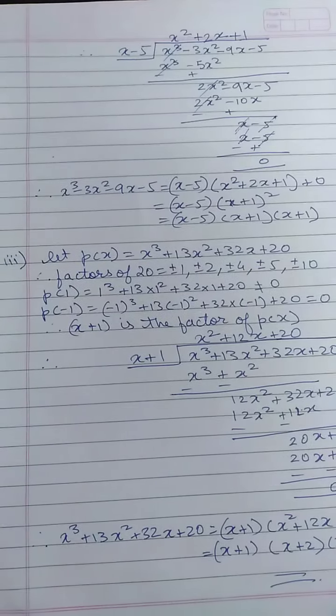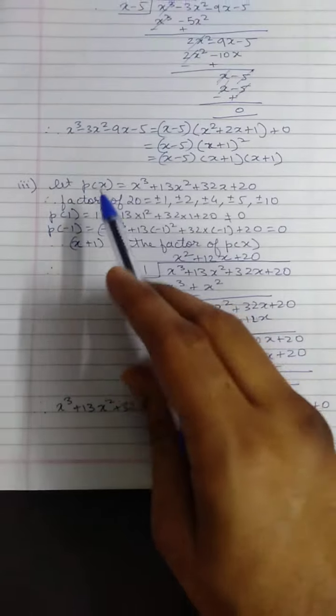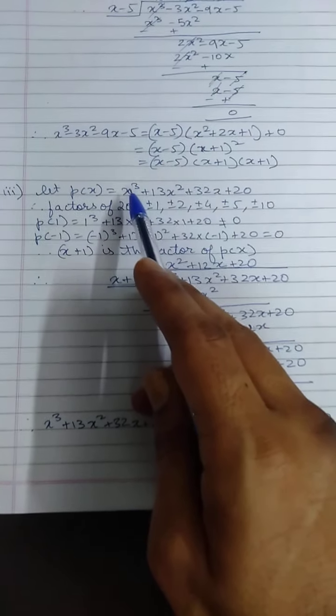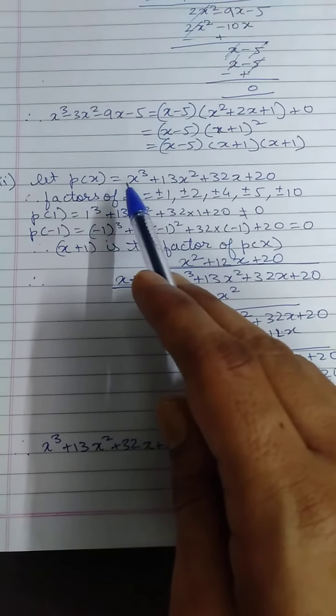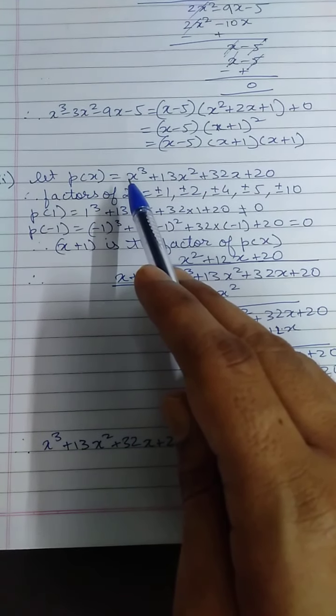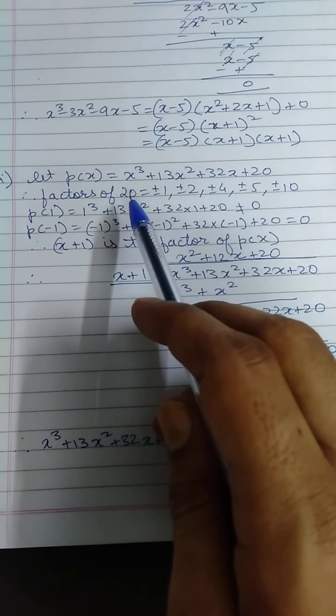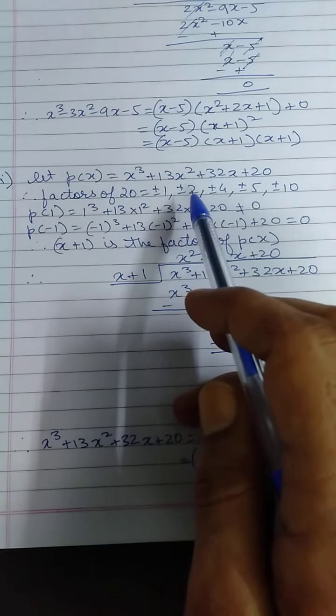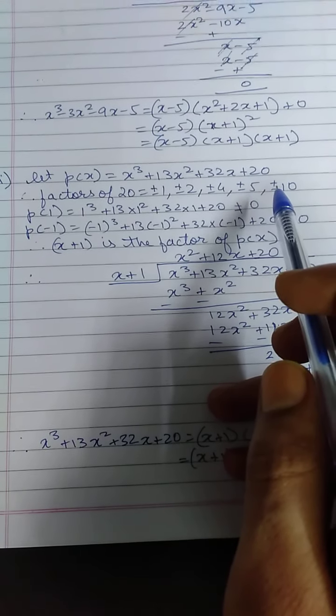Let us see one more example which is problem number 3, where I have p of x is x cube plus 13x square plus 32x plus 20. Now again first check the coefficient of x cube which is 1. Your constant term is 20. So let us find the factors of 20. It can be plus minus 1, plus minus 2, plus minus 4, plus minus 5, plus minus 10.